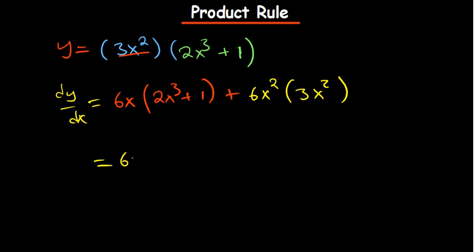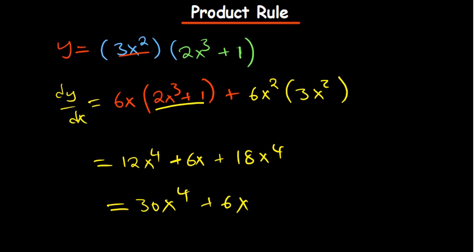So I have 6x. Let me just multiply 6x multiply by what is there. 6 times 2 is 12, x times x³ is x⁴, plus 1 times 6x is 6x. And then the other part is 18, 3 times 3 is 6 by 3, and then x² times x² is x⁴. 18 plus 12, that's 30, plus 6x. So that's as simple as this is the way it will come out simply.